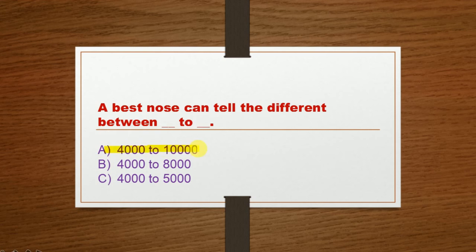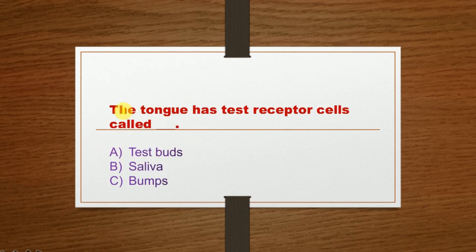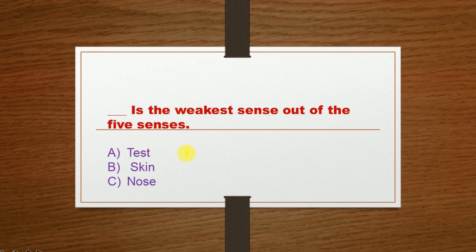Next question: The tongue has taste receptors called dash. Option A: Taste buds, Option B: Bumps. The correct option is Option A: Taste buds.